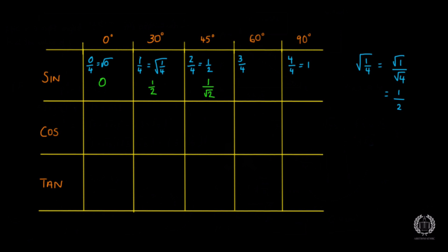For 3 over 4, we do the square root of 3 over 4. Just like before, we square root the individual numbers: square root of 3 stays as root 3, and square root of 4 is 2, so the answer is root 3 over 2. Then for the last one, square root of 1 is just 1.